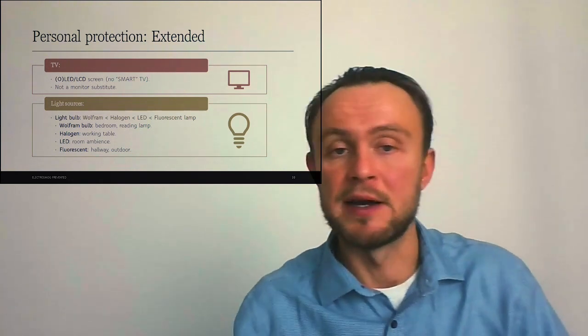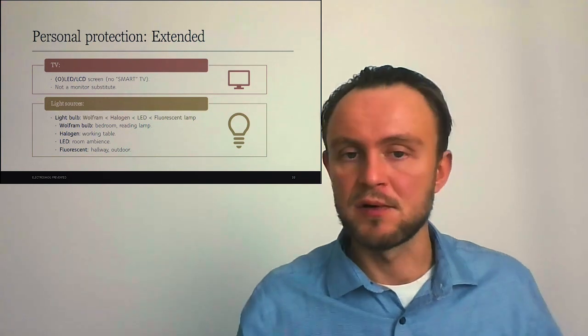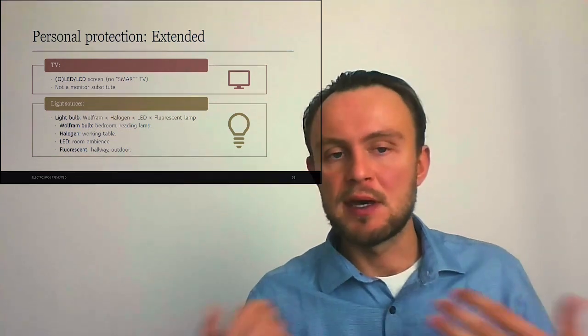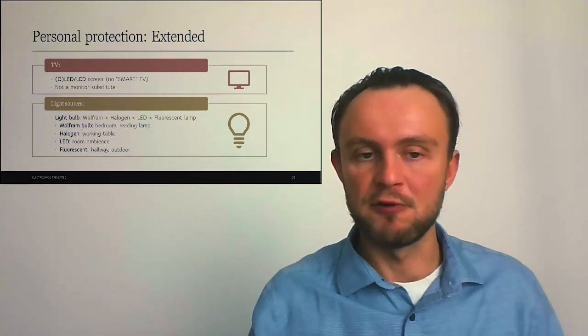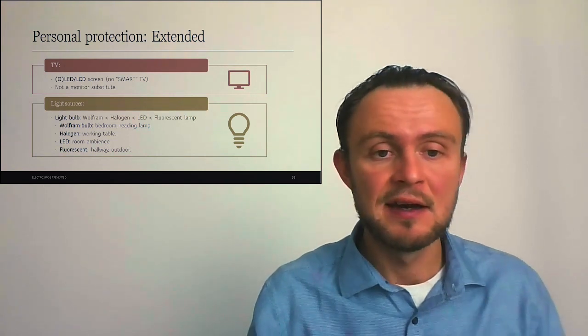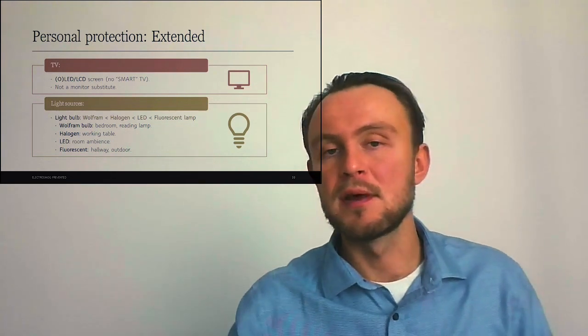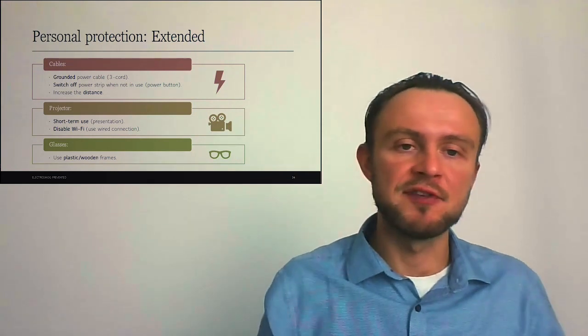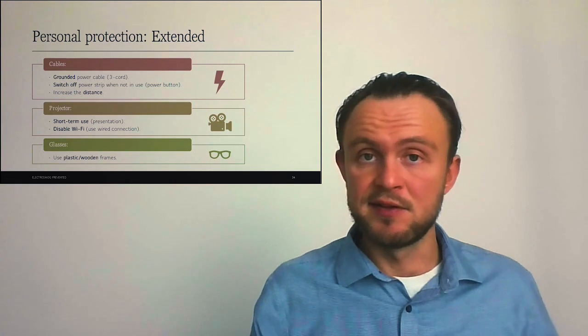We can use it also for working table, but if we need a lot of light there, we can consider a halogen lamp, which would be most suitable for that. LED lights are very effective for ambient room lighting, and I would consider fluorescent lamp only for hallways or outdoor lighting. Many devices are powered via cables, so we should prefer grounded power cables. These are with two sticks and one hole, or one stick and two holes in case of sockets. We can plug cables into a power strip with power button and switch it off before going to sleep. If it's not possible, we can at least increase the distance from the cables.